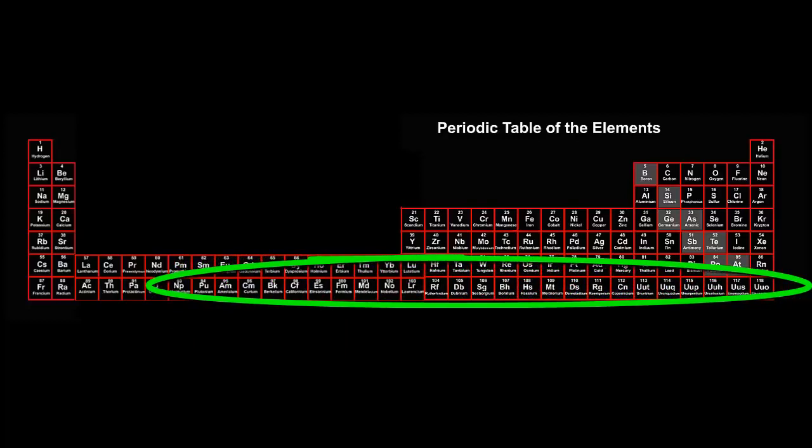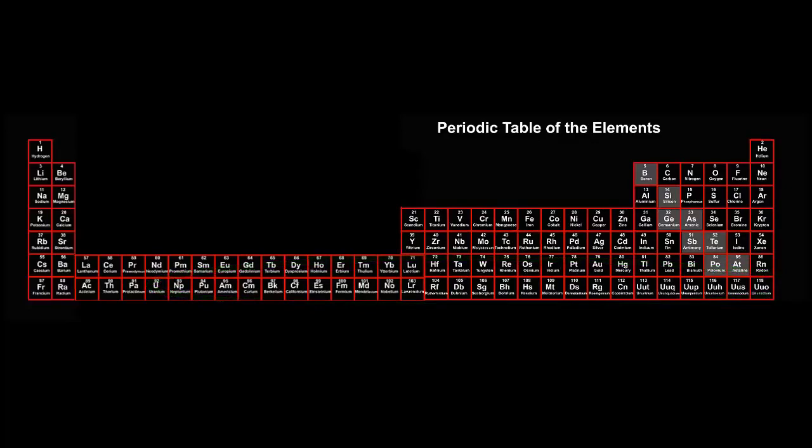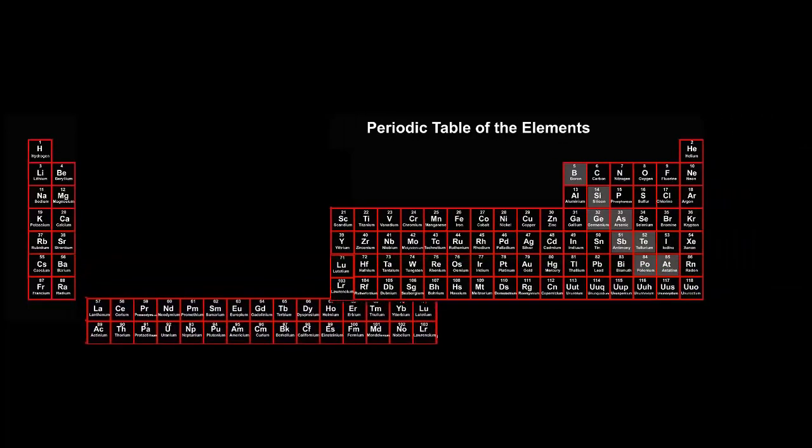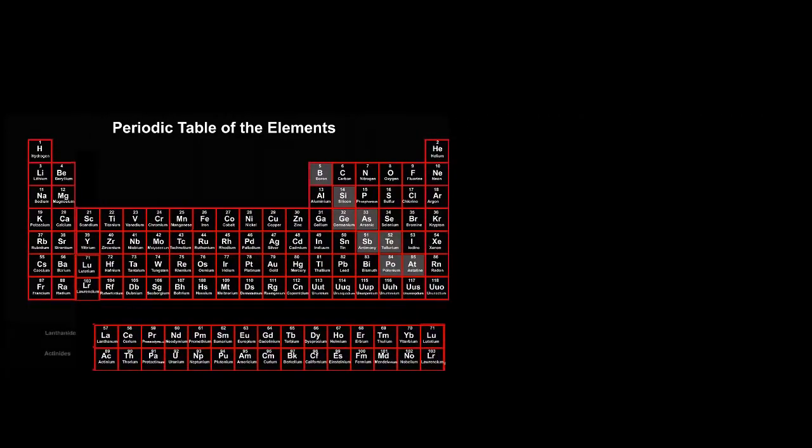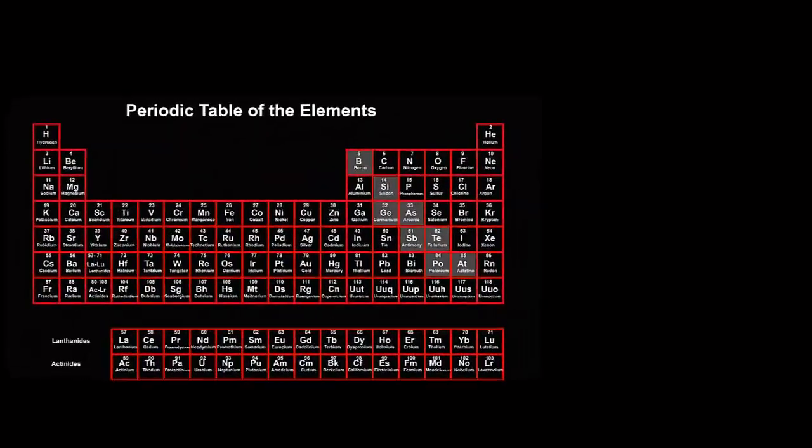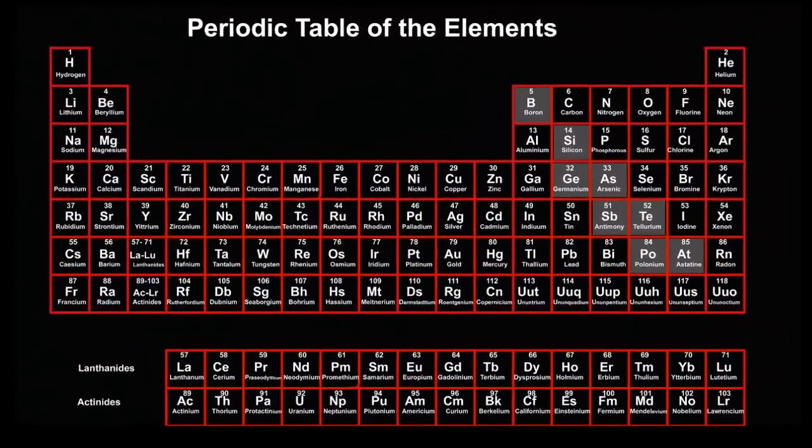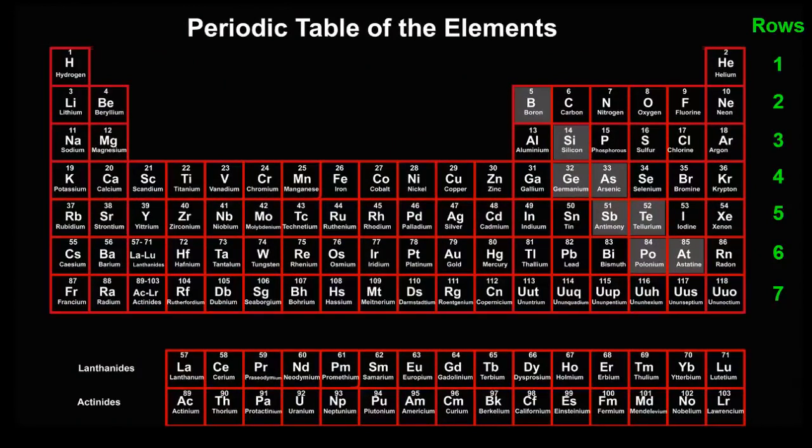Let's collapse the periodic table back to its usual shape, which is more convenient for fitting onto the screen. You can see that the periodic table is also arranged in vertical columns, which scientists call groups. How many groups are there?